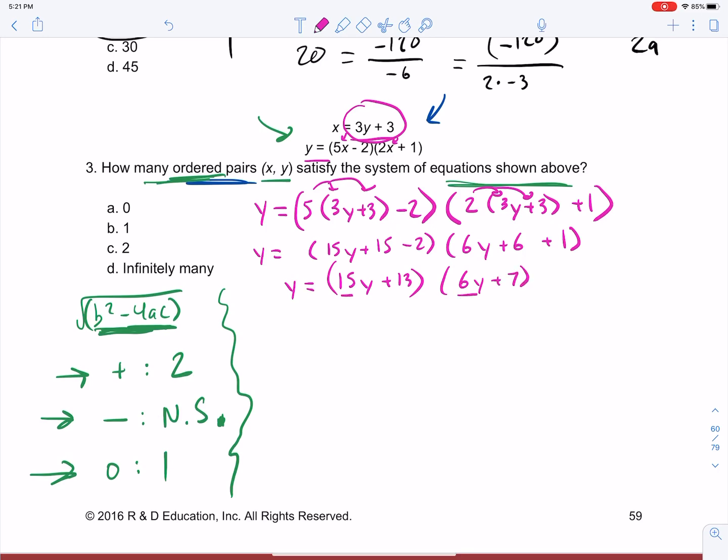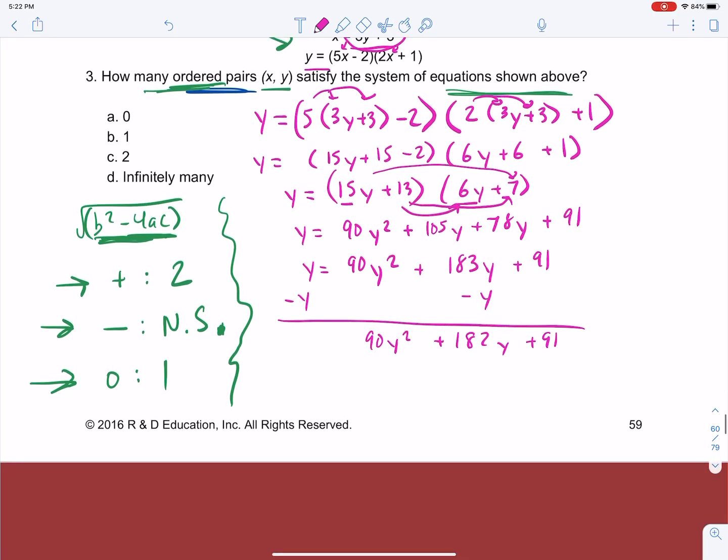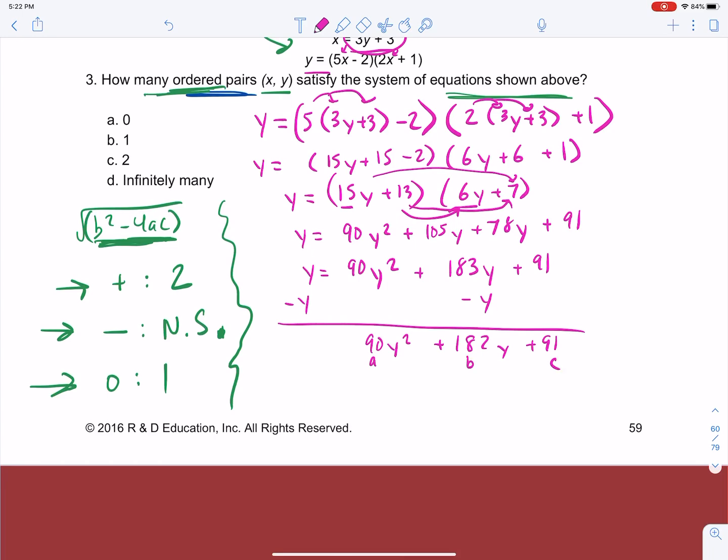So Y equals 15Y plus 13 times 6Y plus 7. And we're almost there. Now we're going to FOIL. So 15Y times 6Y, so Y equals 90Y squared. 15Y times 7 is 105Y. 13 times 6Y is 78Y. And why do we have to do this? I'm just joking. And then 7 times 13 is 91. All right, fantabulous, as they say, as probably no one says. So now, what are we going to do? We just need to combine like terms, and we're almost at the end of this mess. So Y equals 90Y squared plus 183Y plus 91. Subtract Y from both sides. And we have 90Y squared plus 182Y plus 91. And remember, this is our A, our B, and our C. So now we're finally done. Thank goodness.